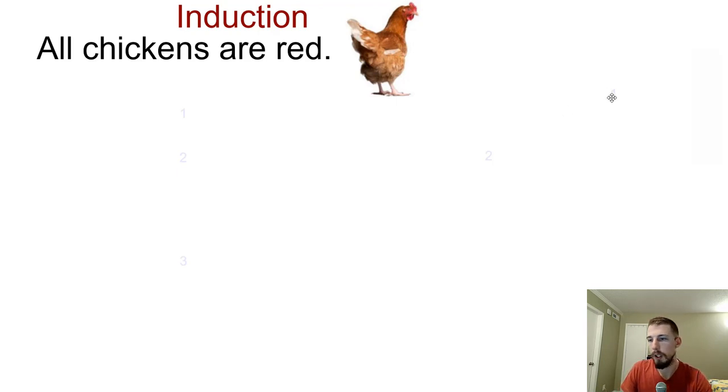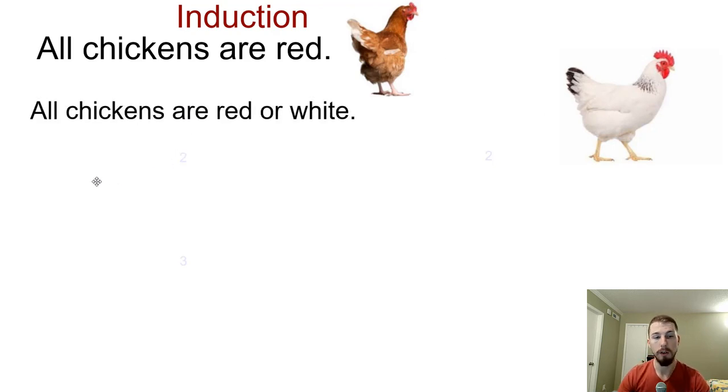Well, then you travel a little bit, and you run across this chicken over here. Maybe you go to another state and they have white chickens. And so now your original theory about all chickens being red, well, now you got to revisit it because before it was true, because that's all that you ever knew. But now you found white chickens. So now you must revisit and you say, okay, so now all chickens are either red or they're white.